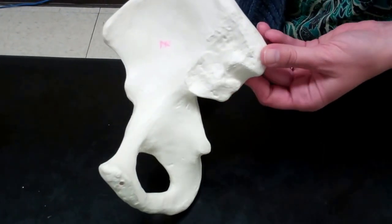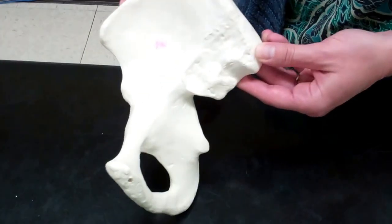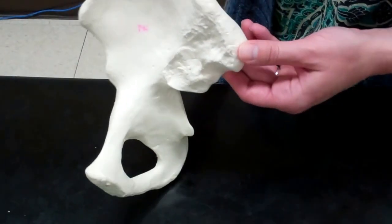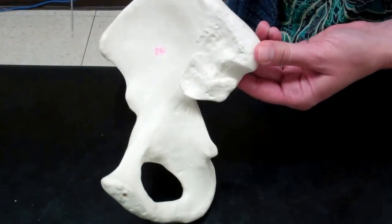Now welcome to our hip bone. The coxal bone is going to be made of three separate bones that are actually all fused together.